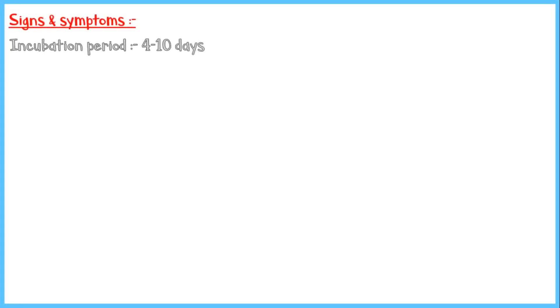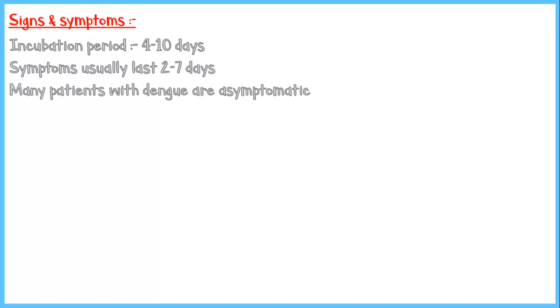The incubation period of the virus is about 4 to 10 days on average. Following onset, symptoms usually last for about 2 to 7 days. Many patients with dengue virus infection are asymptomatic — approximately 1 in 4 people with dengue infection become symptomatic.